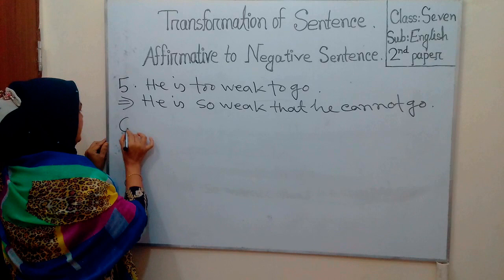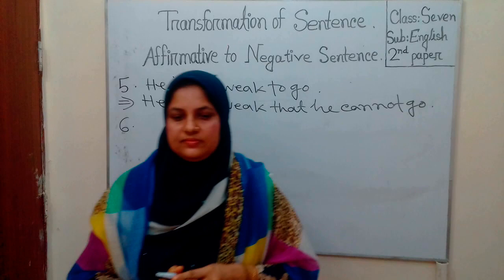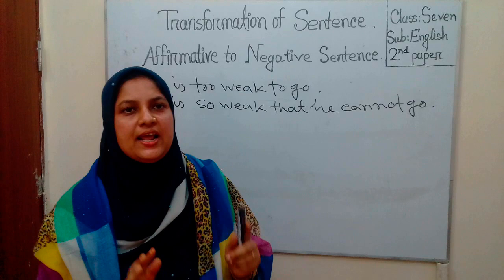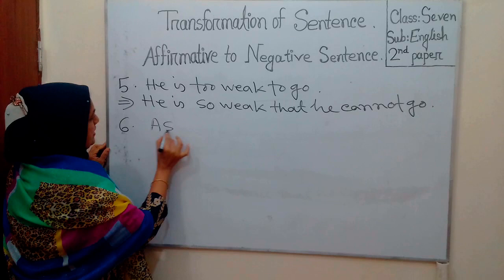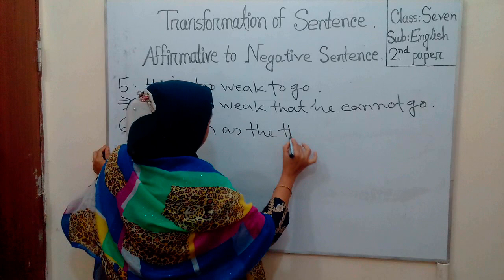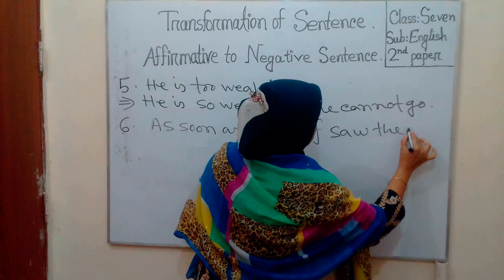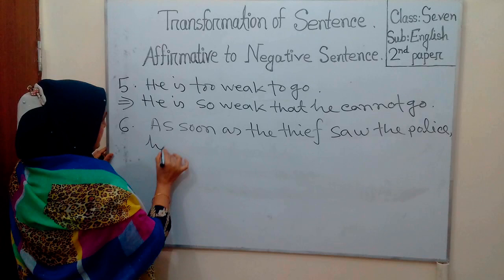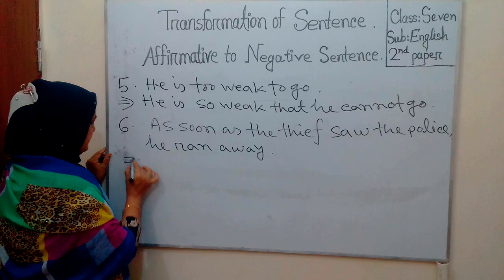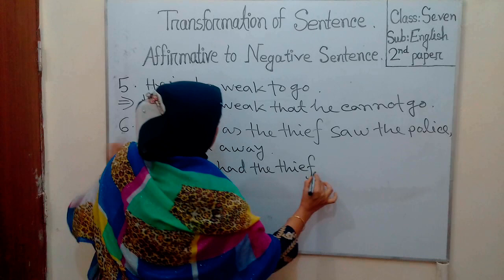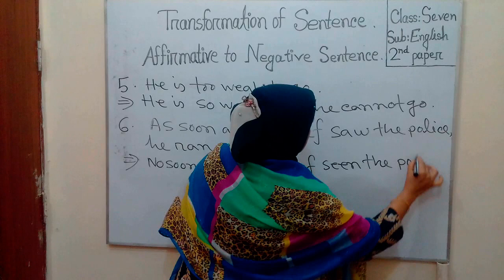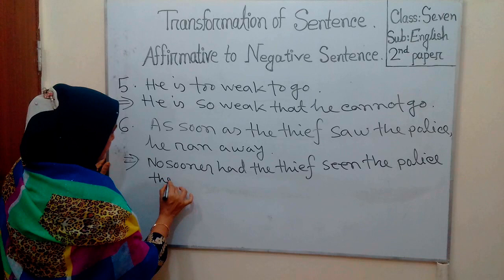Rule 6. If there is 'as soon as' in the affirmative sentence, it should be changed using 'no sooner had...than'. For example: 'As soon as the thief saw the police, he ran away.' Negative sentence: 'No sooner had the thief seen the police than he ran away.'